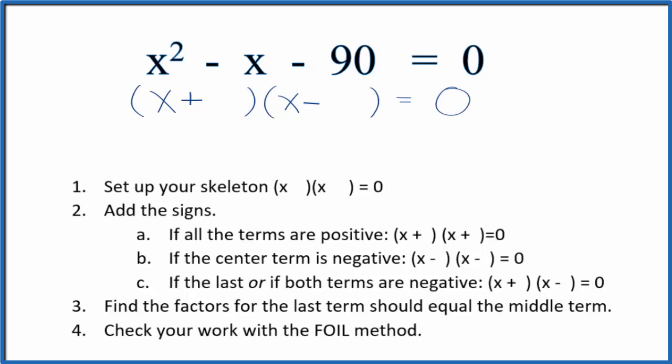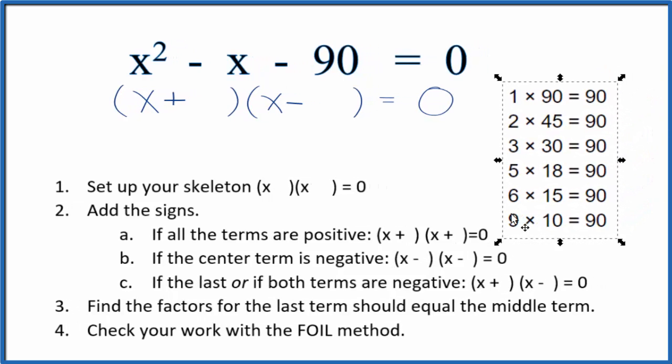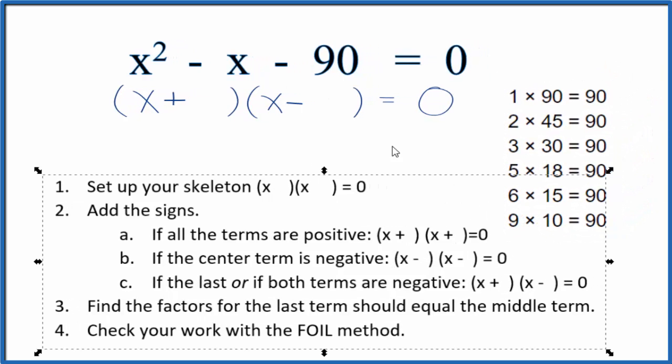The factors for 90, here they are, and I'm looking for something that would give me minus 90 but then add up to minus 1x. 9 times 10 would give me 90, and if I had a minus 10, 9 times minus 10 that's minus 90, 9 plus minus 10 is minus 1. So let's put a minus 10 and then the positive 9 here.